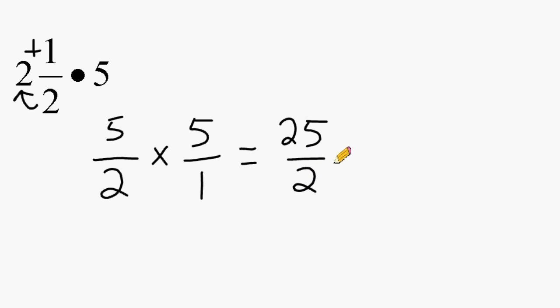And now we have an improper fraction that we have to rename as a mixed number. So we are going to go off to the side here and divide 25 by 2. And 2 can fit inside 25 a total of 12 times, which gives us a total of 24. And that leaves us with the remainder of 1.